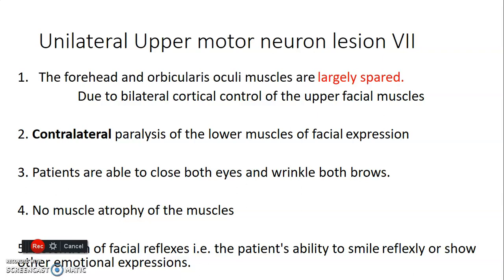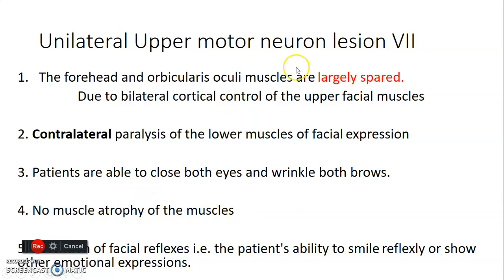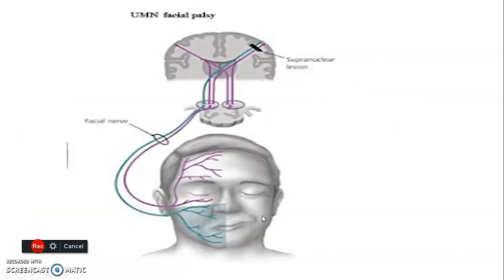In upper motor neuron lesion of facial nerve, the forehead and orbicularis oculi muscles will be spared — because the muscles of the upper part of the face are controlled by both sides of the brain. If you injure the upper motor neuron on one side, those muscles can still be controlled by the other side, so their action will be spared. The muscles of the lower part of the face will get paralyzed on the contralateral side. Patients are able to close both eyes and wrinkle in upper motor neuron lesion, and there is no muscle atrophy.